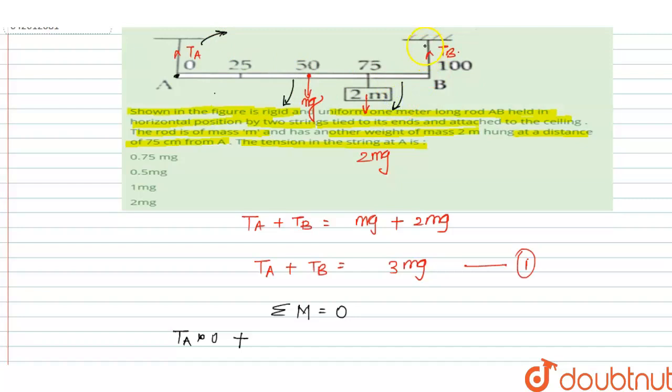2Mg moment in this direction and Tb moment in this direction. Then Mg times distance 0.5, plus 2Mg times distance 0.75.